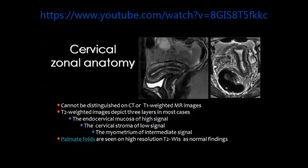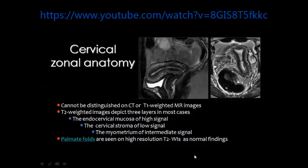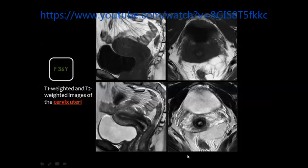The cervix has different anatomic details compared to the uterine body. One issue to notice during examination is the presence of high signal folds within the endocervical canal, known as palmate folds, which are considered a normal finding. This is the appearance of the uterus and cervix on T1-weighted images and on T2-weighted images. On T2 you are able to see the cervical stroma and the cervical canal, while on T1 these details are usually masked.